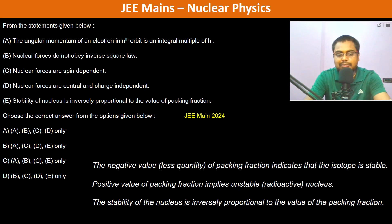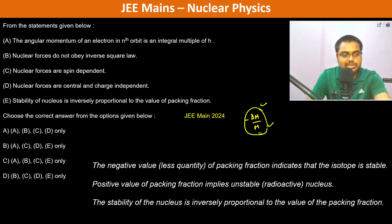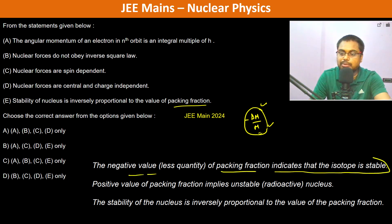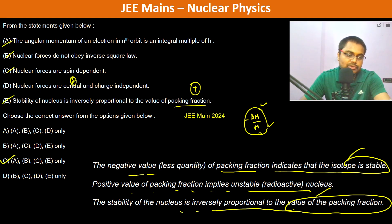Stability of a nucleus is inversely proportional to the value of packing fraction. Packing fraction is defined as (−Δm)/m, where Δm is the mass defect. A negative value of packing fraction indicates a stable isotope; a positive value implies an unstable nucleus. So stability being inversely proportional to packing fraction is true. Only the 'central force' statement is false, so statements A, B, C, and E are true — therefore C is the answer.